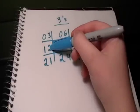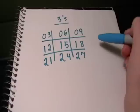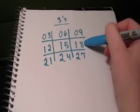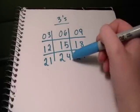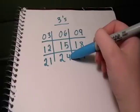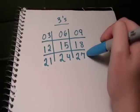4 times 3 is 12, 5 times 3 is 15, 6 times 3 is 18, 7 times 3 is 21, 8 times 3 is 24, and 9 times 3 is 27.